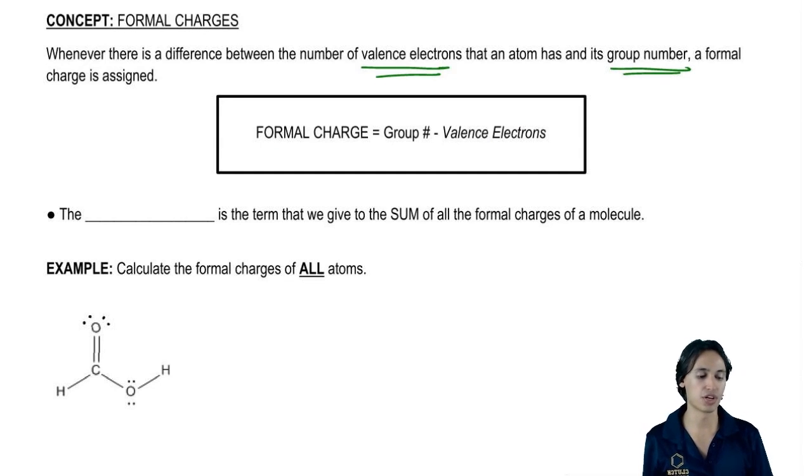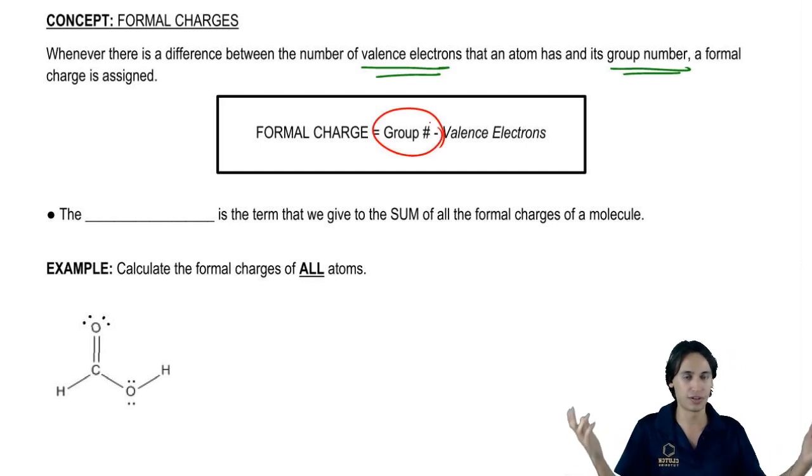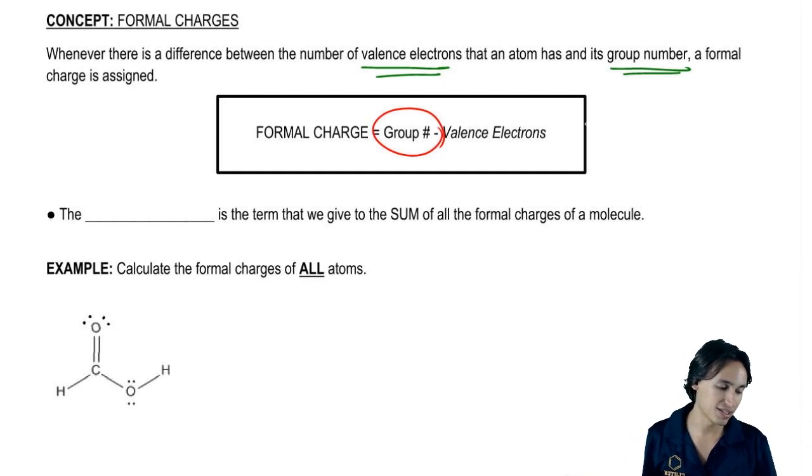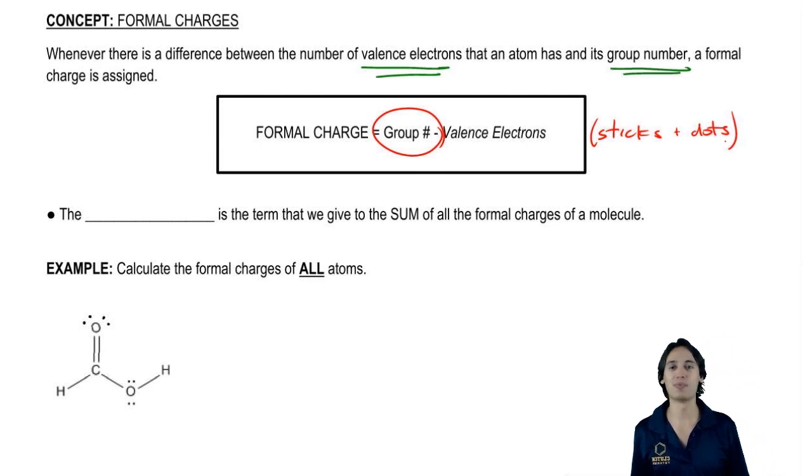So all you do to calculate formal charge is you take the group number, whatever that is, that could be group 4, group 5, whatever, and then you subtract the valence electrons, which is just the sticks and the dots. It's really simple math. A lot of times you'll just be able to do this on your fingers. So you take your group number, then you just subtract the sticks and the dots and you're good.